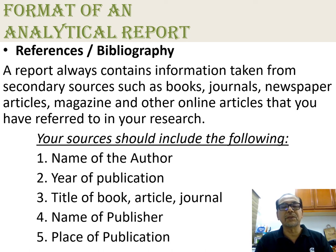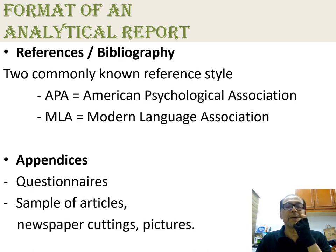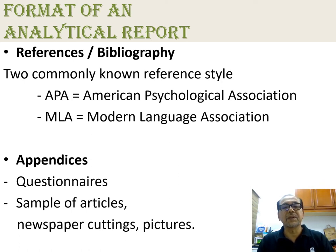Your sources should include the name of the author, year of publication, title of the book or article or journal, name of publisher, and place of publication — all written in the last part where you put references. You can simply go to Google and take an example of a report to see the same structure. There are two commonly known reference styles: APA and MLA. In Malaysia, we normally use APA formatting.